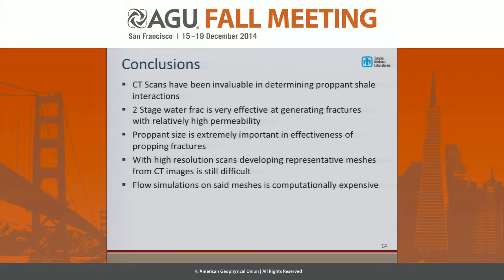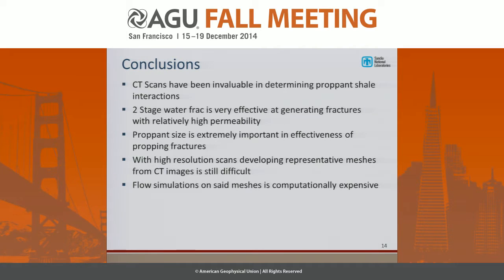Conclusions: the CT scans have been invaluable in determining proppant interactions with the shale and with the granite in preliminary tests. The two-stage water frack was very effective at generating fractures with relatively high permeability in the lab. Proppant size is obviously extremely important. Developing representative meshes from high-resolution scans is quite difficult but we're making a lot of progress. Flow simulations on those meshes are computationally expensive — which is why nobody actually tries to model all individual proppants — so the goal is to scale up to a continuum model useful for industry.